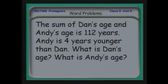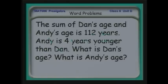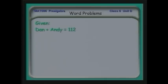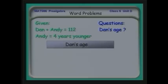Let's look at a problem. The sum of Dan's age and Andy's age is 112 years. Andy is four years younger than Dan. We want to know Dan's age and Andy's age. We have two different quantities here — Dan and Andy — so we're going to have to work back and forth between them. What we're given: the sum of the two men's ages is 112 years, and Andy is four years younger than Dan. What we're asked: what are the ages of the two men?